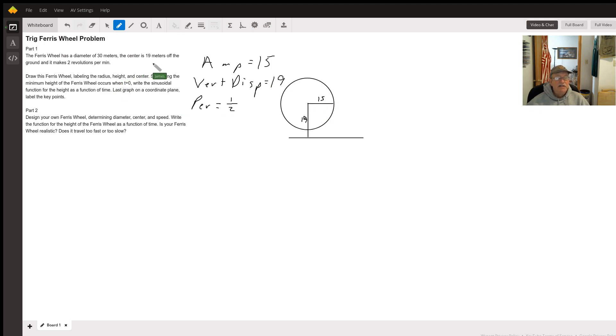The center is 19 meters off the ground, so that means our vertical displacement is going to be 19. If it makes two revolutions per minute, that means it's going to make one revolution in half a minute, so our period is one half.